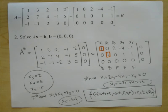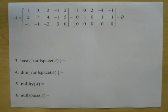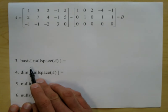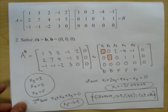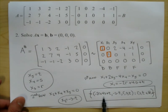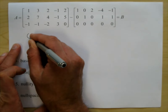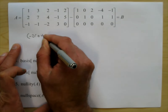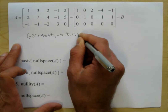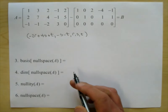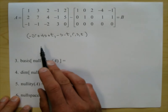Problem number three: find the basis for the null space. We already found the null space. Writing out the 5-tuple: negative 2r minus s minus t for the first two, then r, s, t. A basis is a minimal spanning set, so we should splactor this — split and factor. We factor out r, s, and t separately to get three vectors.